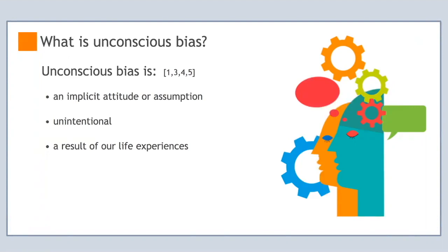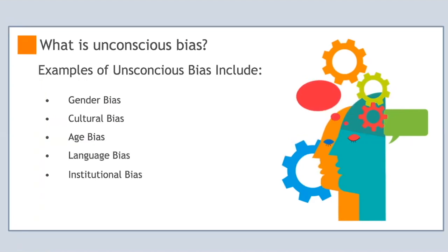Unconscious bias is a result of our life's experiences and affects all types of people. Examples of unconscious bias include gender bias, cultural bias, age bias, language bias, and institutional bias. Unconscious biases are important to recognize in instances when quality, relevance, and competence are being evaluated. Examples of these instances include peer review of grants and manuscripts, search committees, and reference letters.